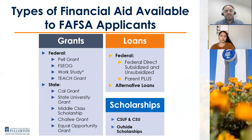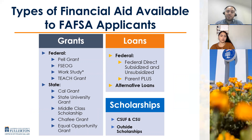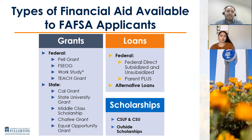If you are a FAFSA applicant, these are the various forms of financial aid you could potentially be eligible for. Under federal grants, we have things like the Pell Grant, Federal Work Study, and the TEACH Grant for students interested in a teaching credential program. Under state grants, we have things like the Cal Grant, State University Grant, and the Middle Class Scholarship. Students may only receive one of these state grants at a time — whichever one you are specifically eligible for. We are not able to award the Cal Grant, State University Grant, and Middle Class Scholarship all at once.